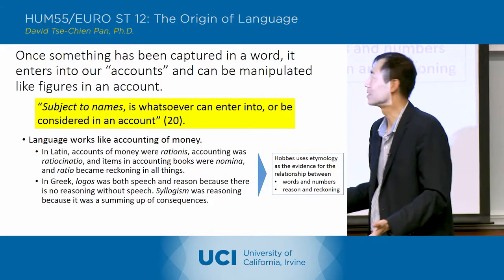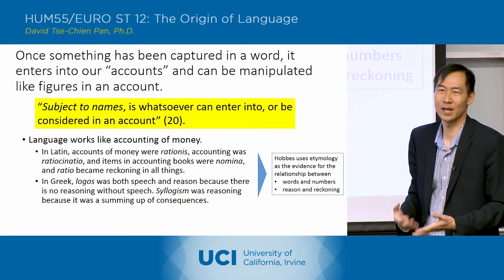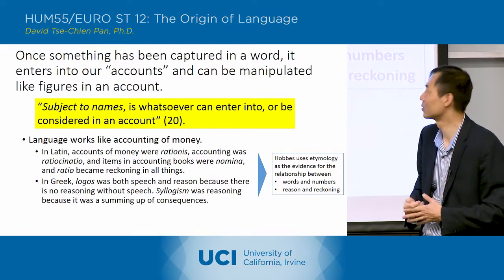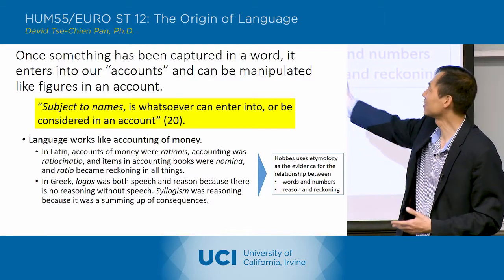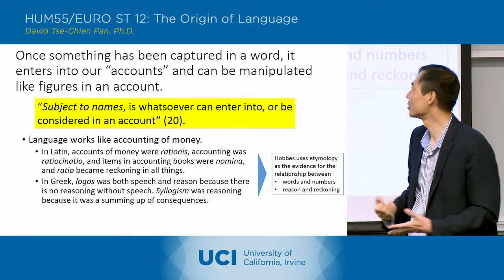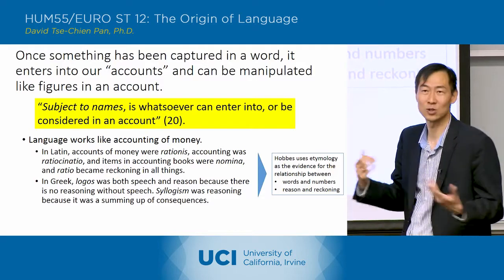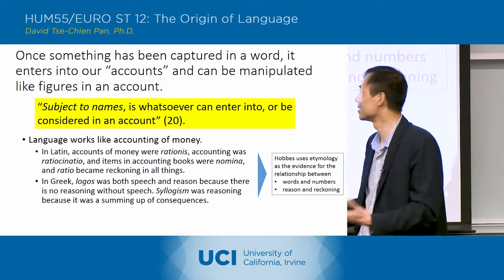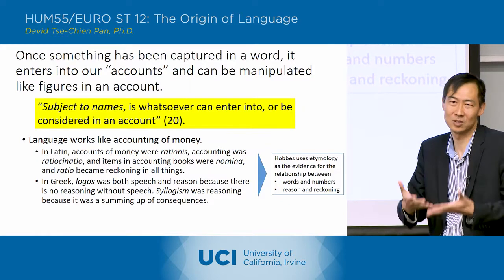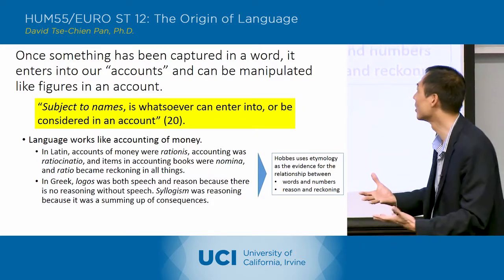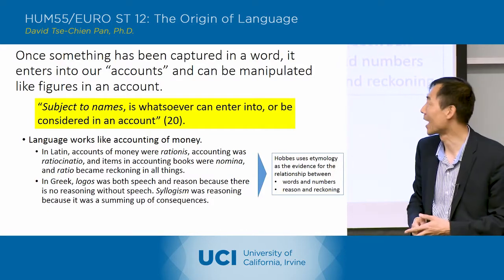He justifies this first by using etymologies — looking at the history of language to give us conclusions about how language works. He says language works like accounting: money in Latin — accounts of money were 'rationes,' which is also a word for rationality. Accounting was 'ratio sinatio,' also related to reason. And items in accounting books were 'nomina,' which is also the word for nouns.